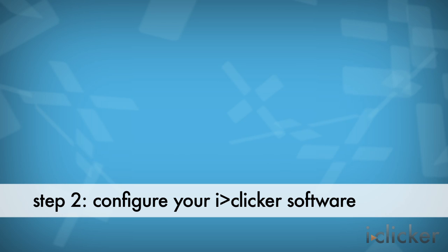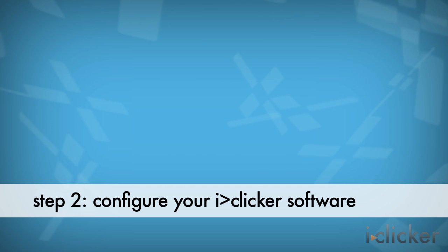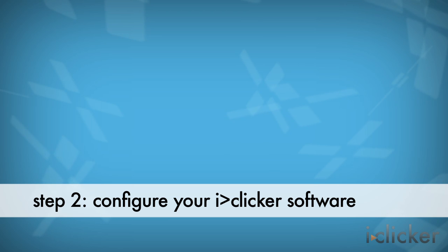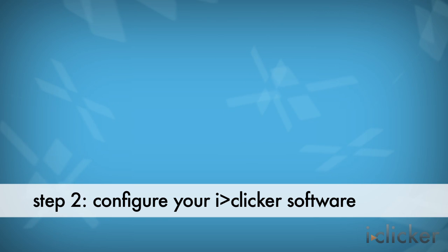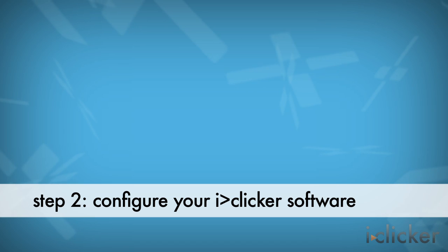Your next step is to configure your iClicker software. Before using iClicker Integrate, you must specify the LMS platform you're using on campus. You only need to do this once for each iClicker course folder, for example Psychology 101 or Psychology 201.